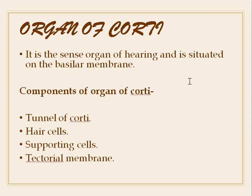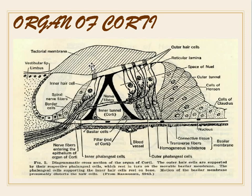The organ of Corti is the sense organ of hearing and is situated on the basilar membrane. Its components are the tunnel of Corti, the hair cells, the supporting cells, and the tectorial membrane. Here you can see the tectorial membrane, the tunnel, the basilar membrane, and the outer and inner hair cells.